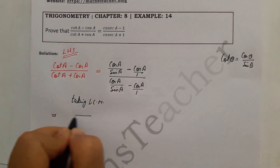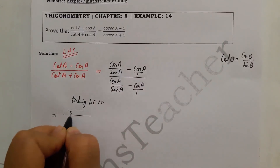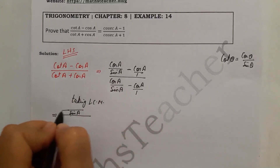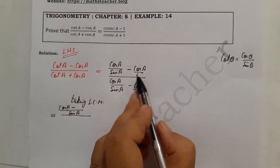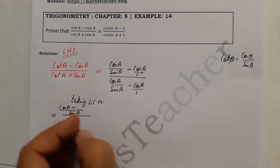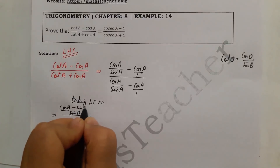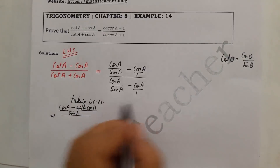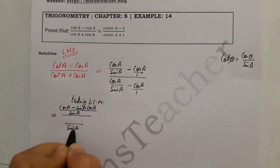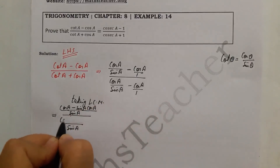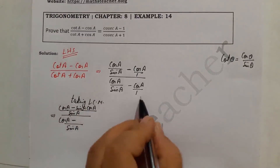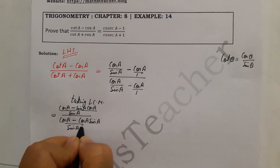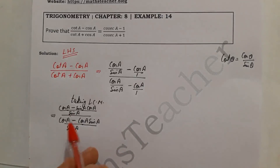The LCM is sin A. So in the numerator: sin A times cos A divided by sin A, minus cos A times sin A. In the denominator: sin A times cos A divided by sin A, plus cos A times sin A. Then cos A and cos A appear, and we proceed with sin A cos A and sin A.